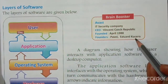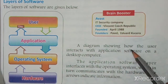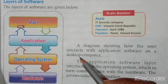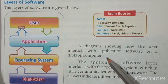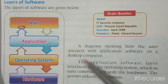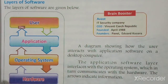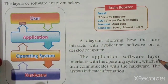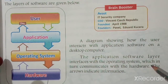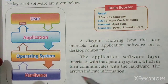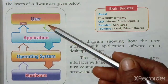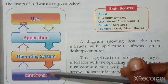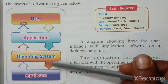A diagram shows how the user interacts with application software on a desktop computer. The layers are: hardware, operating system, application software, and user. The application software layer interfaces with the operating system, which in turn communicates with the hardware. The arrows indicate the flow of information, showing how the user and hardware interact through the layers of software.